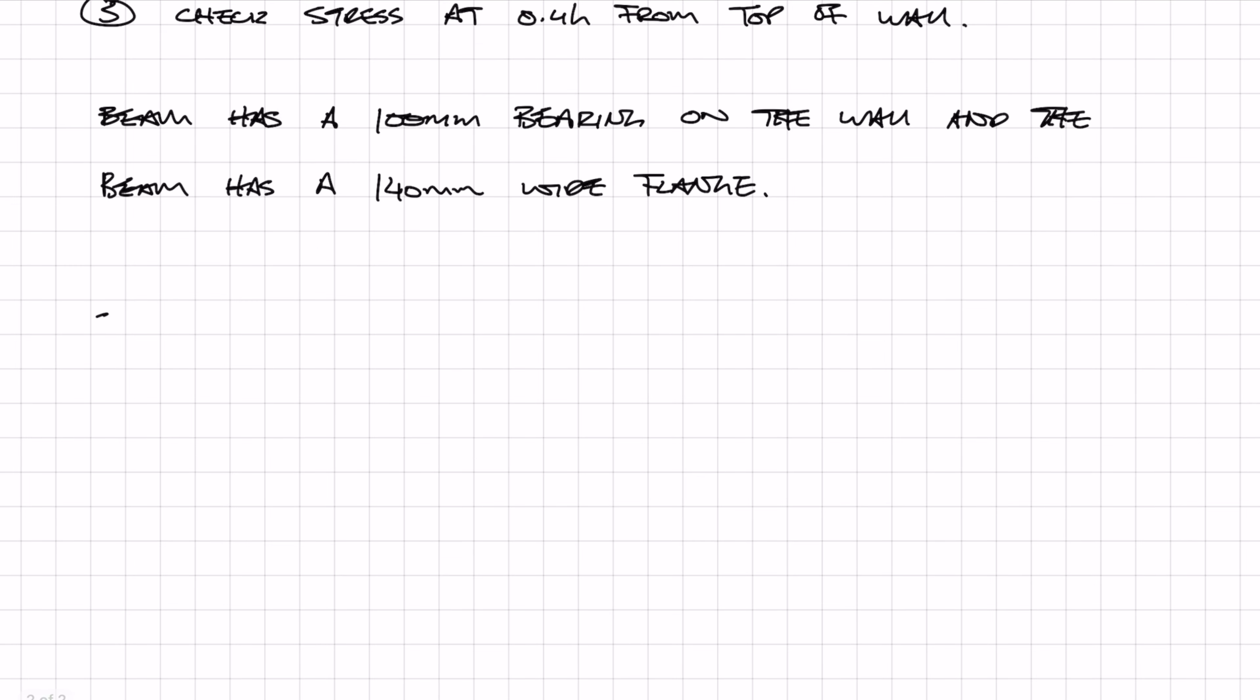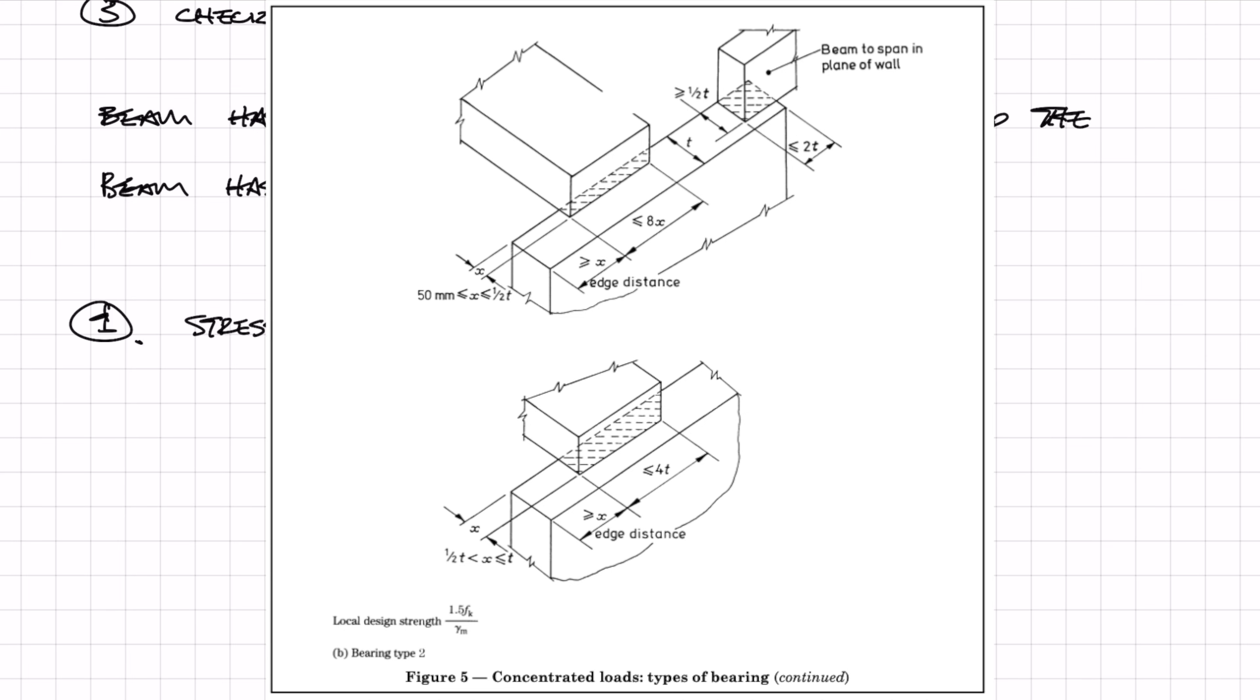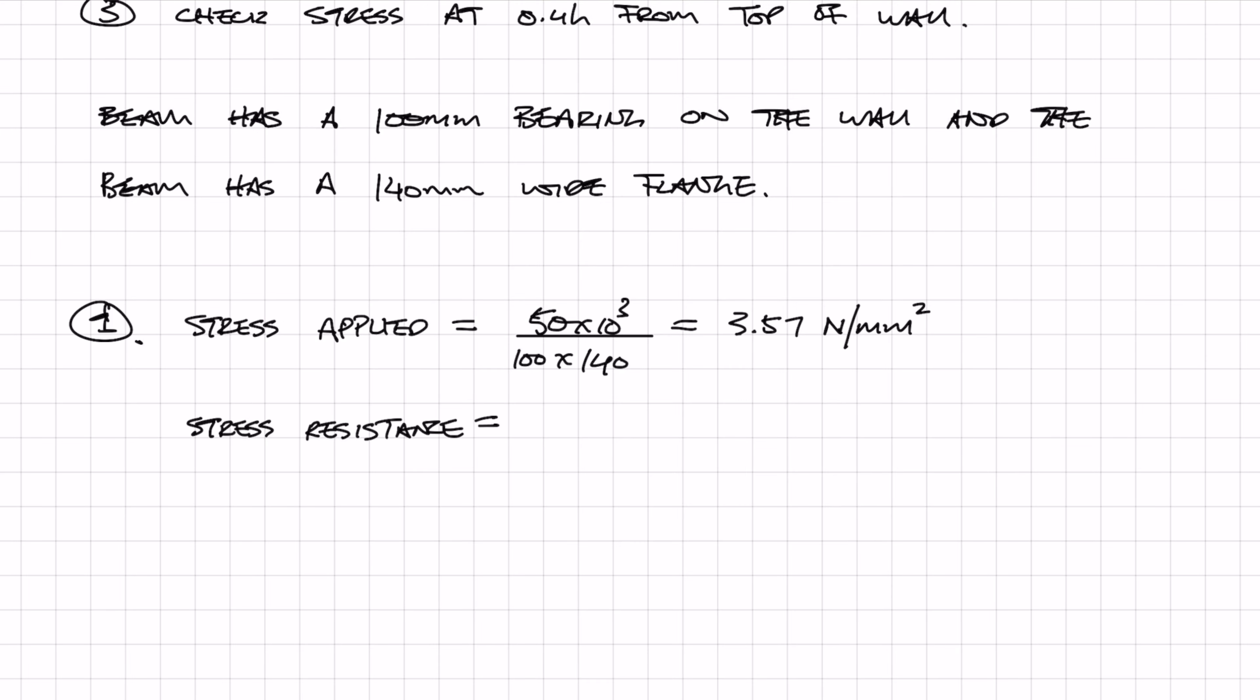To check the stress applied, it's quite simply the force divided by the bearing area, so that's 50 kN divided by 100 times 140. Then we need to check the resistance. In our case it's bearing type 2 from figure 5. That means we use the equation of 1.5 fk over the safety factor, and that gives us a stress resistance of 2.74. Because this value is less than the applied stress, that means we need a spreader or a padstone.